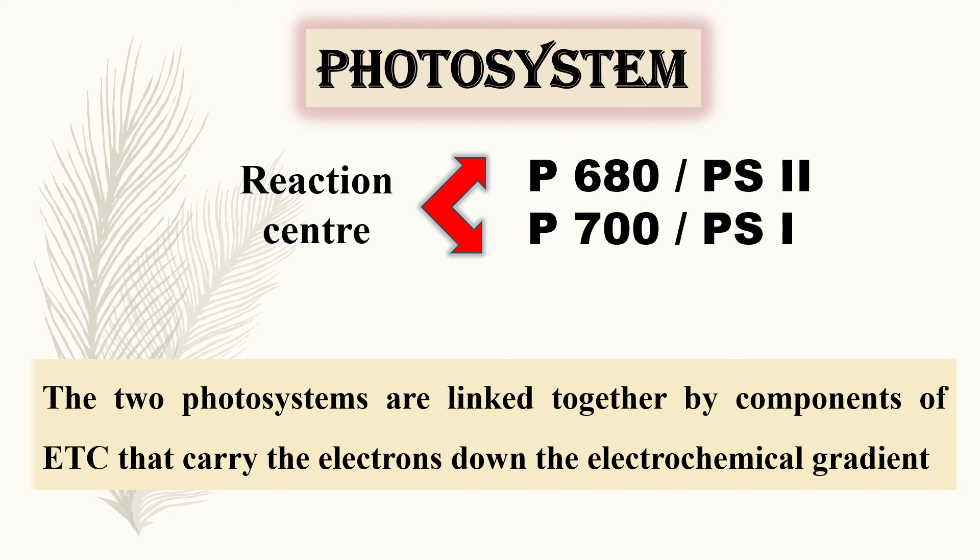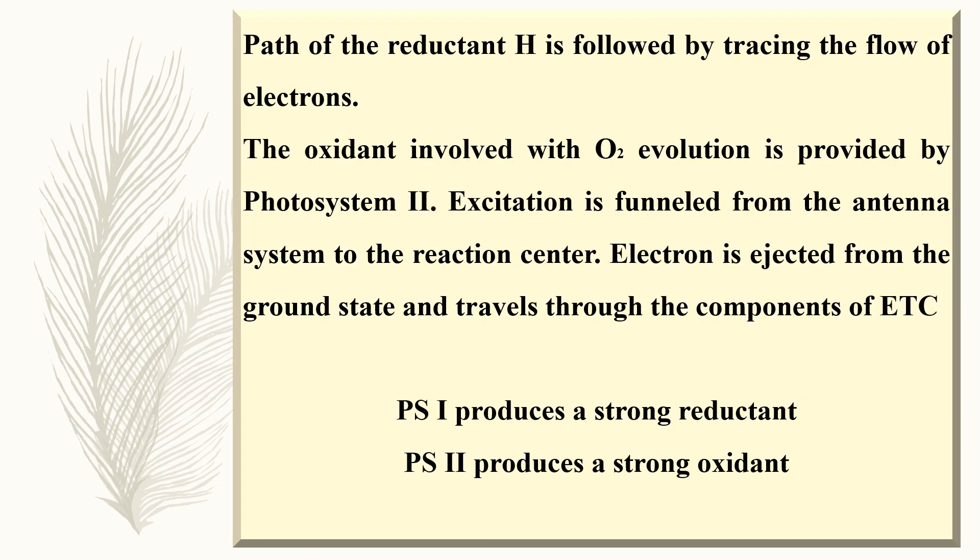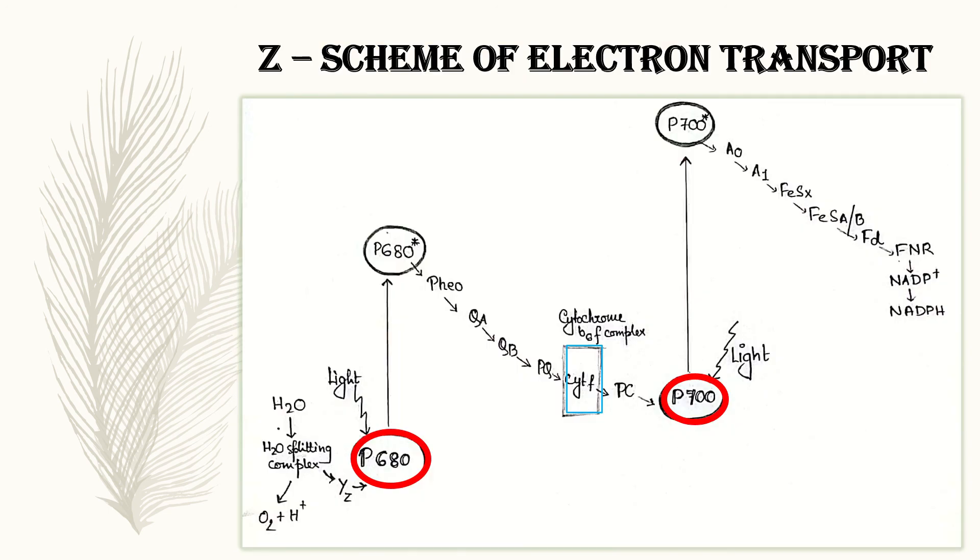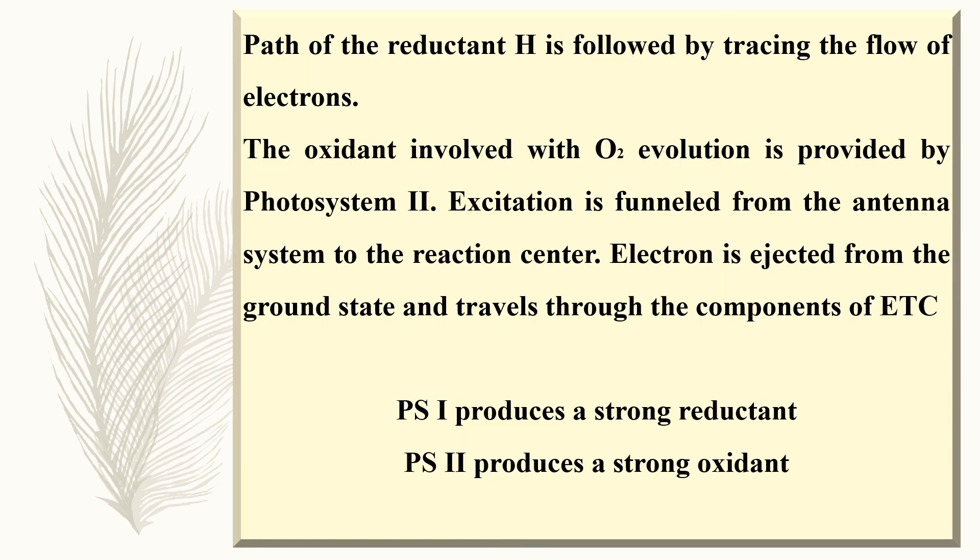The two photosystems are linked together by components of electron transport chain that carry the electrons down the electrochemical gradient. The path of the reductant is followed by tracing the flow of electron. The oxidant involved with oxygen evolution is provided by photosystem 2. Excitation is funneled from the antenna system to the reaction center.